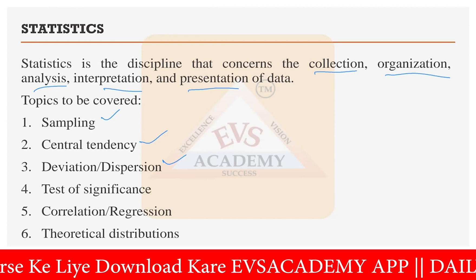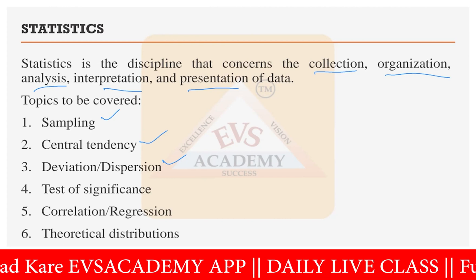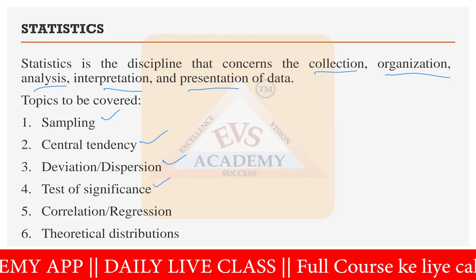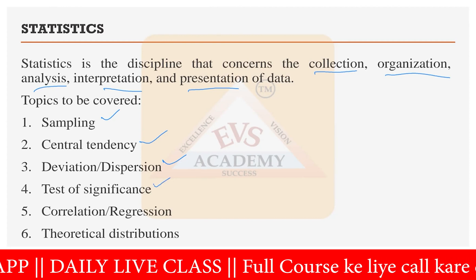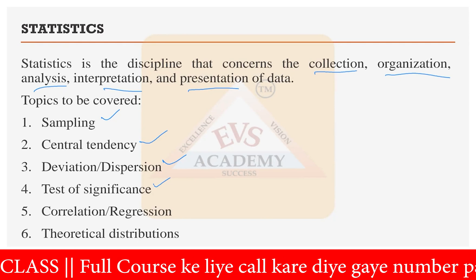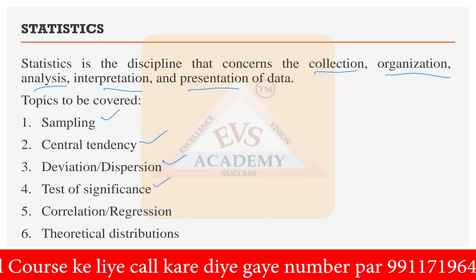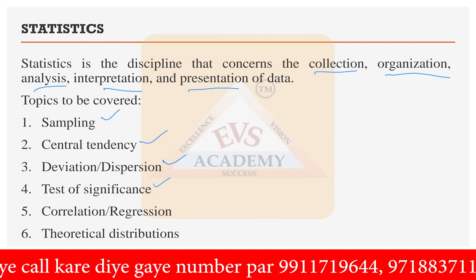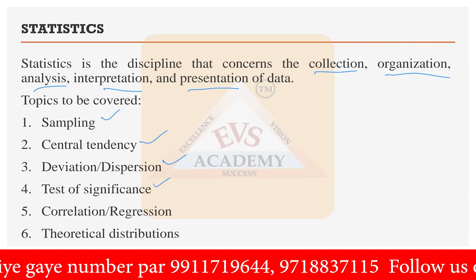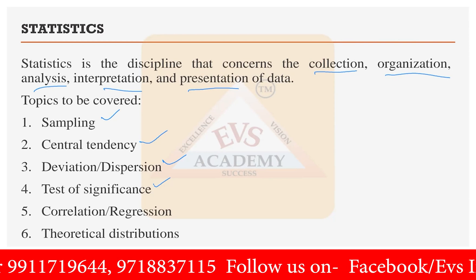Then we have to complete some tests of significance — for example, Z test, T test, F test. All these tests we have to cover, and under this, a few tests like the chi-square test are also included. We will discuss all of these one by one once we complete deviation and dispersion.